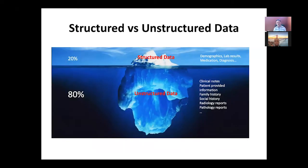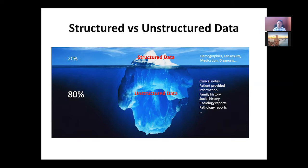In electronic health records, structured data usually means demographics, lab results, medication, and diagnosis. Unstructured data refers to notes and patient-provided information sent through apps or patient portals, including family history, social history, and findings in radiology or pathology reports. All this information is hidden in electronic health records and covers 80% of the audit information.